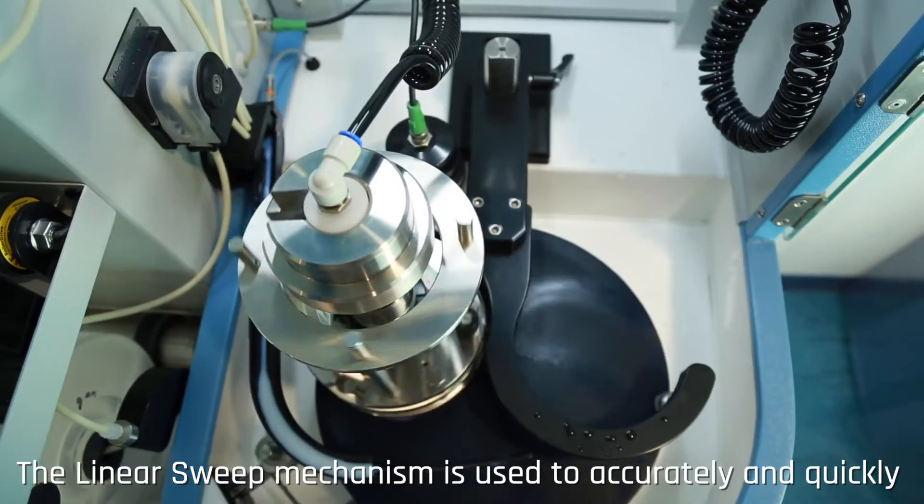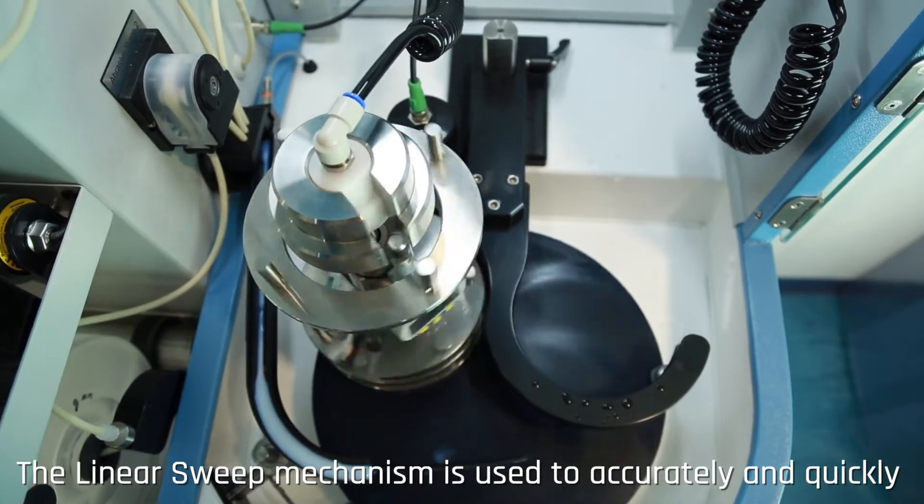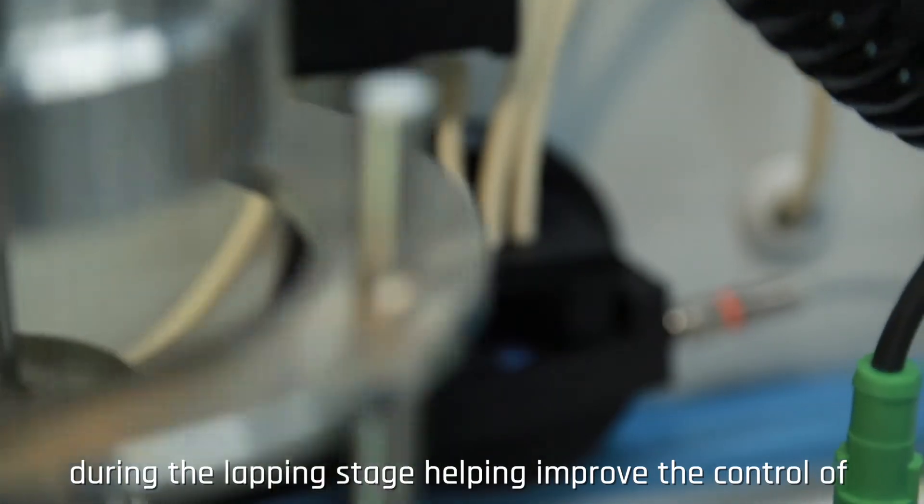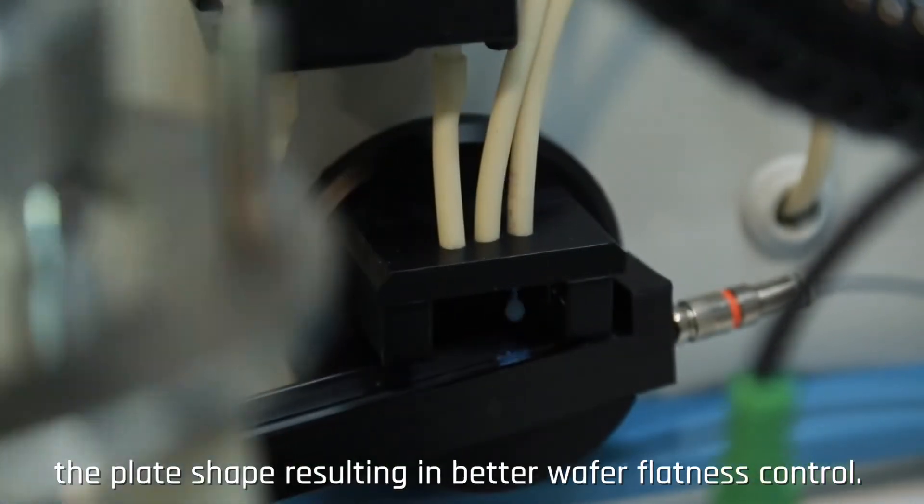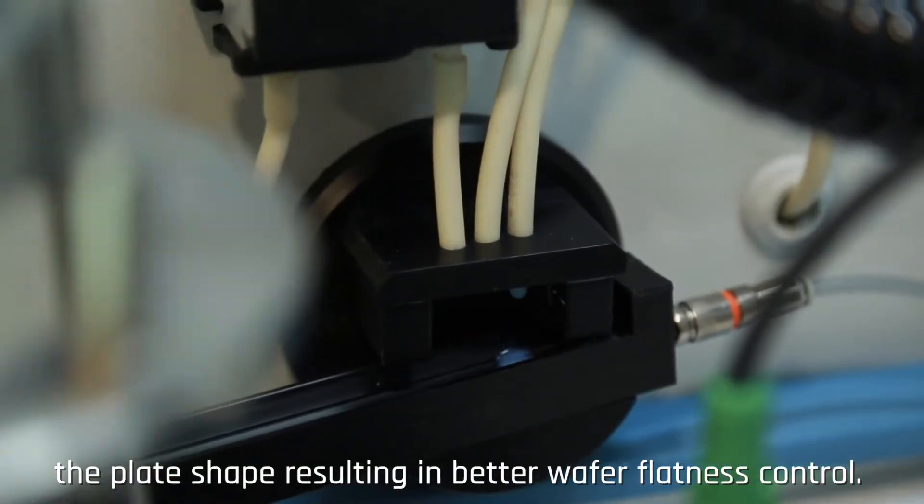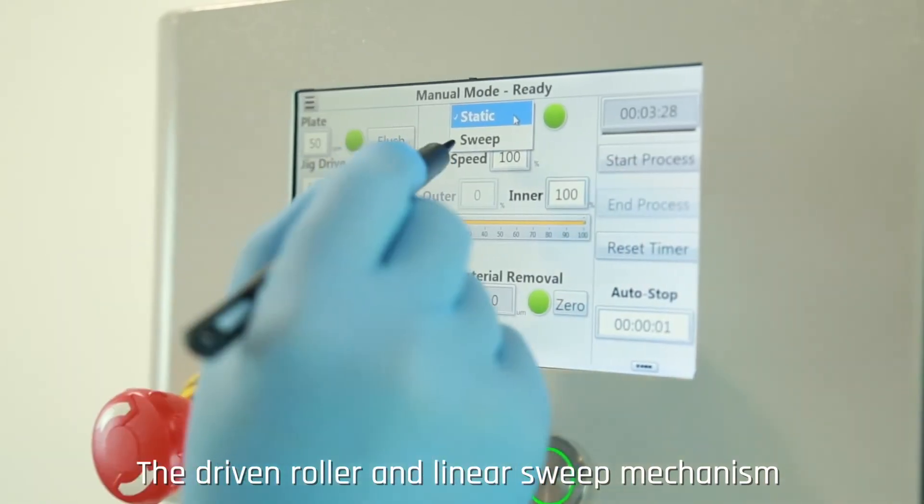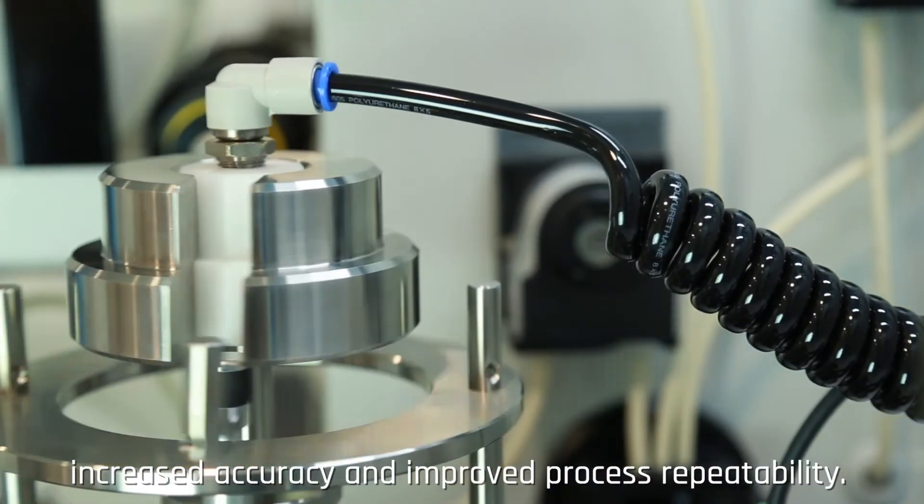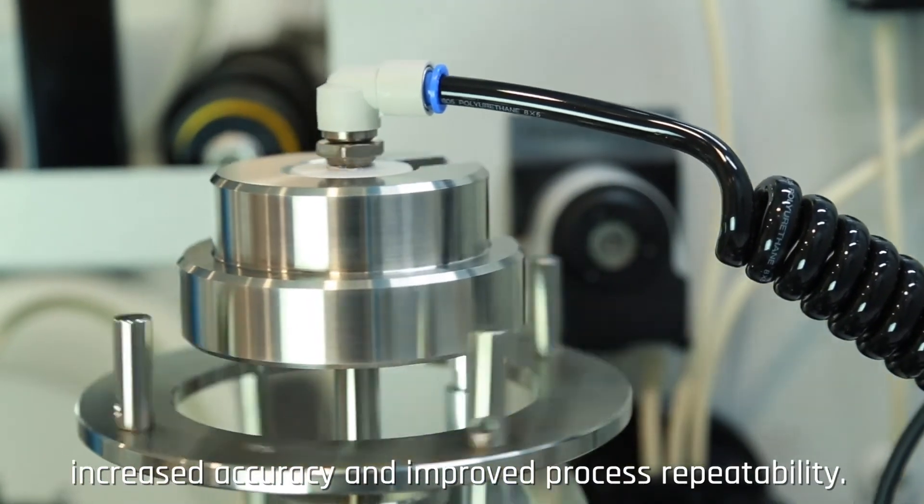The linear sweep mechanism is used to accurately and quickly position the jig and plate flatness monitor during the lapping stage, helping improve the control of the plate shape resulting in better wafer flatness control. The driven roller and linear sweep mechanism have contributed to improved material removal rates, increased accuracy and improved process repeatability.